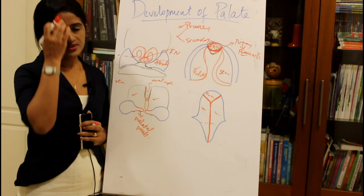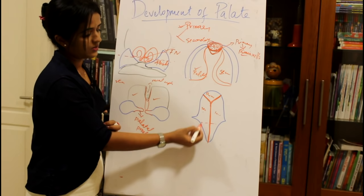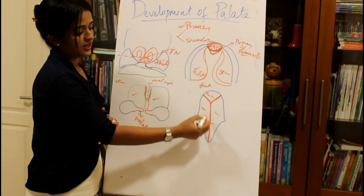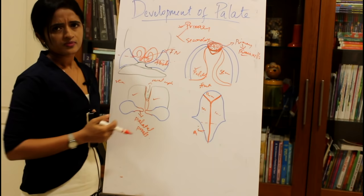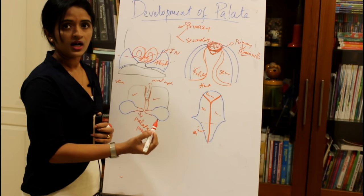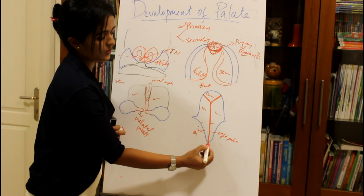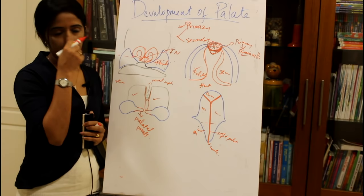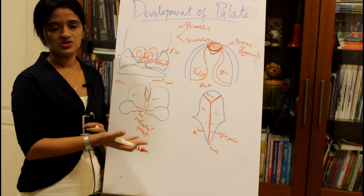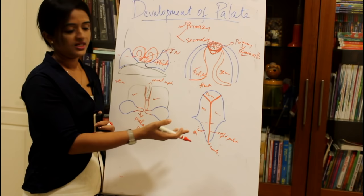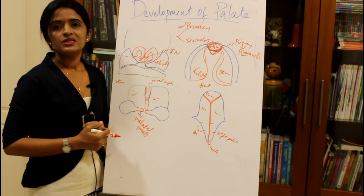The mesoderm of the definitive palate undergoes intramembranous ossification. The anterior portion — the premaxilla — ossifies, and continuing posteriorly most of the palate ossifies, but the posteriormost portion does not ossify. The ossified part forms the hard palate, the un-ossified part forms the soft palate, and the posteriormost hanging portion is called the uvula.